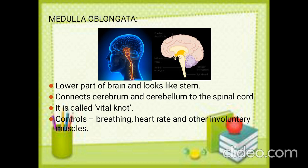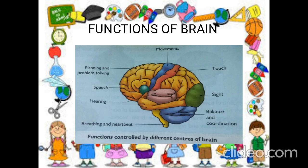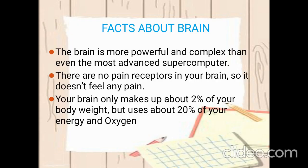The medulla oblongata is responsible for breathing, heart rate, and other involuntary muscle functions. These are the main functions of medulla oblongata. So these are the functions of the brain, and now we are going to see some interesting facts about the brain.